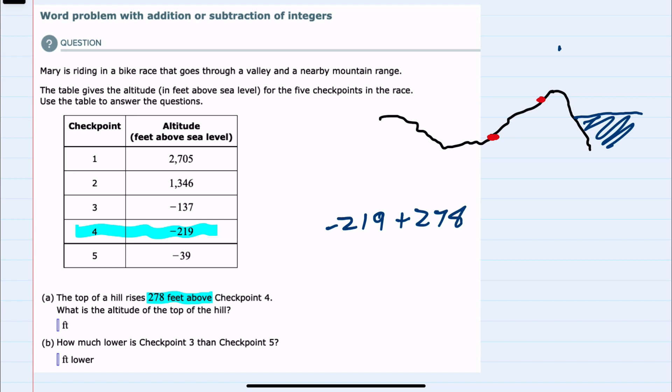To do this integer addition when the signs are different we know that we should subtract the numbers. So 278 minus 219 would give us 59. And we should keep the sign of the larger number. The larger number being positive here, this would be 59 feet as the altitude at the top of this hill.